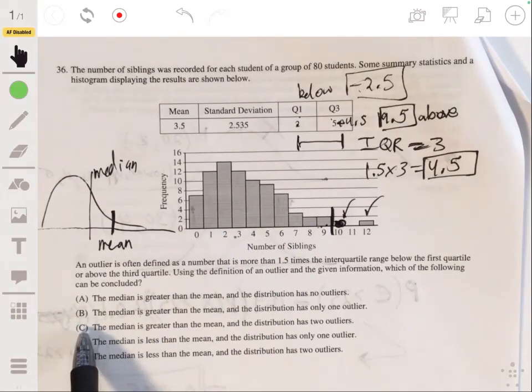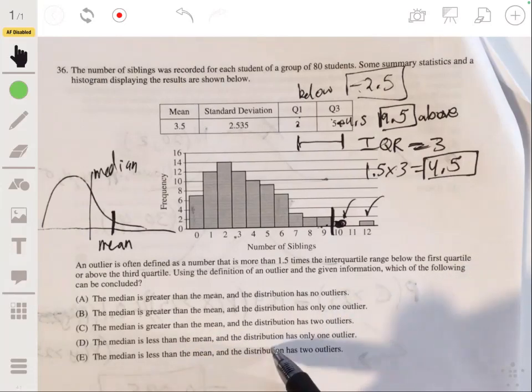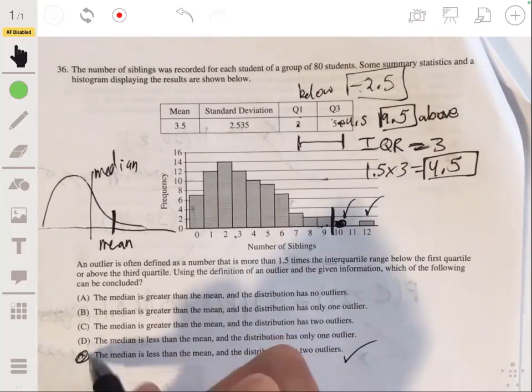Let's see which of these would work. So it's not going to be A, B, C. So D and E, so the median, it's going to be E. The median is less than the mean, and we have two outliers. The answer is clearly E.